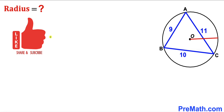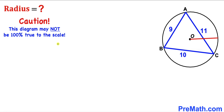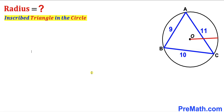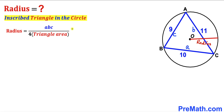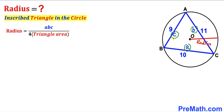Please don't forget to give a thumbs up and subscribe, and please keep in mind that this figure may not be 100% true to scale. Since we are dealing with a triangle inscribed in a circle, we can use this well-known formula: the radius of the circle equals a times b times c divided by four times the area of the triangle, where a, b, and c are the side lengths of the triangle.